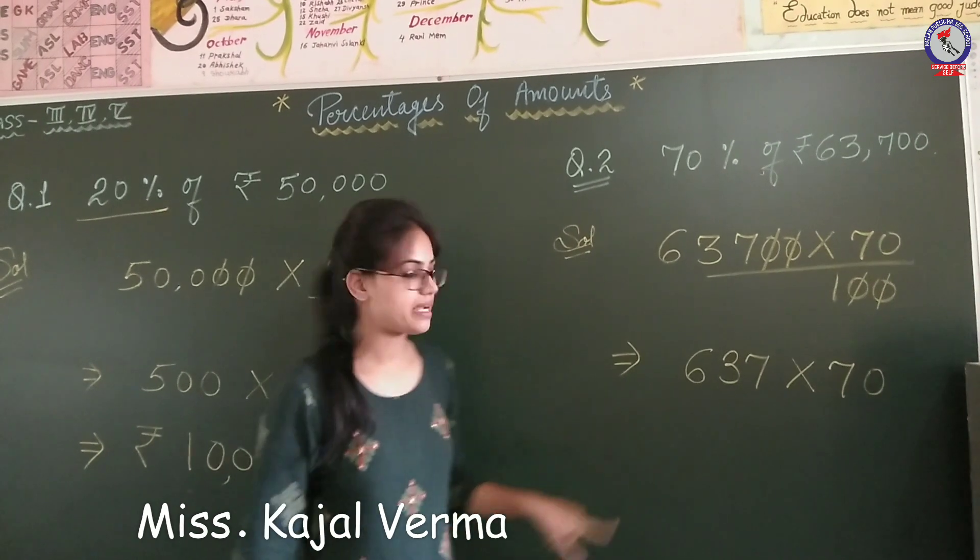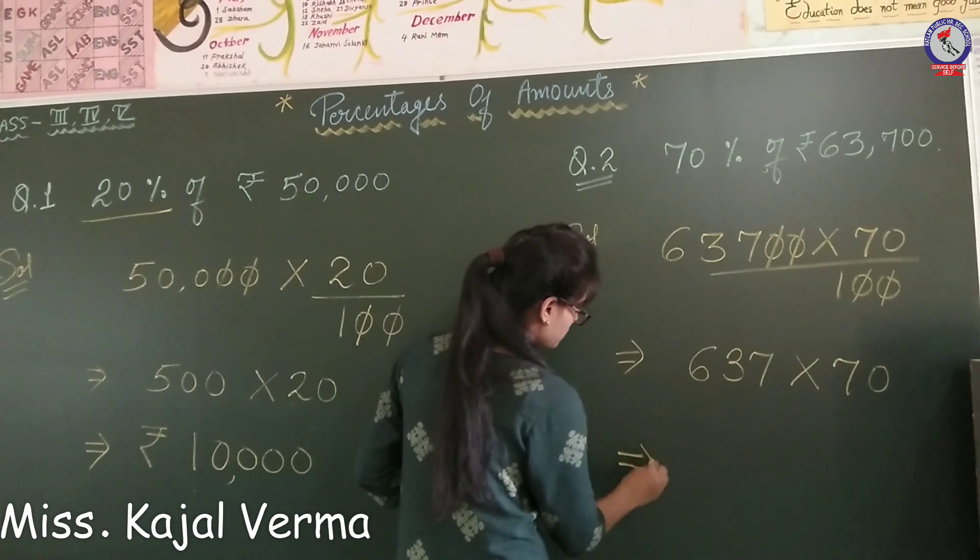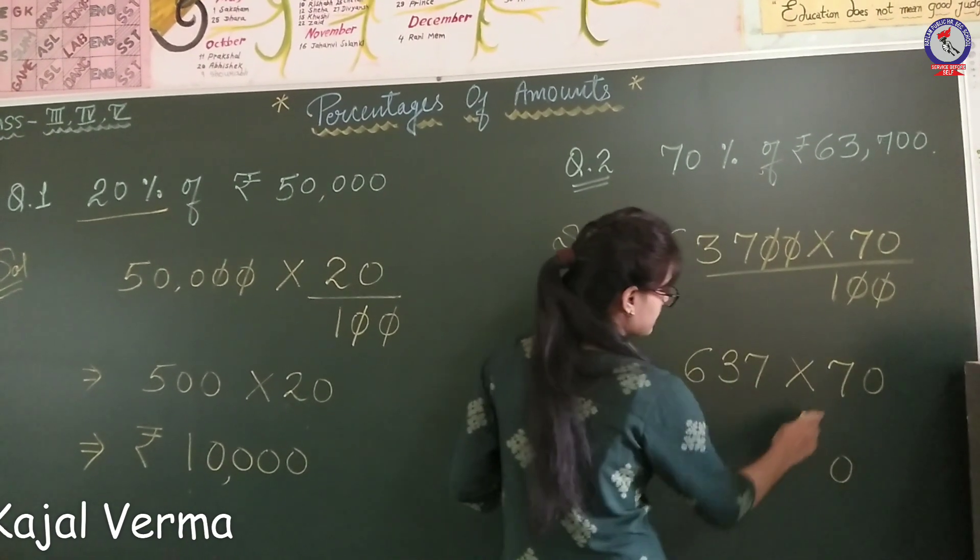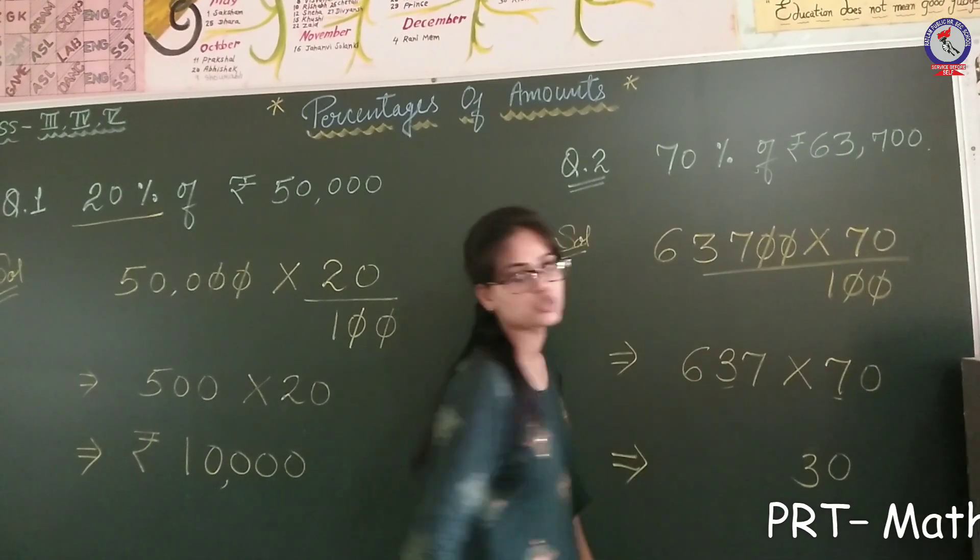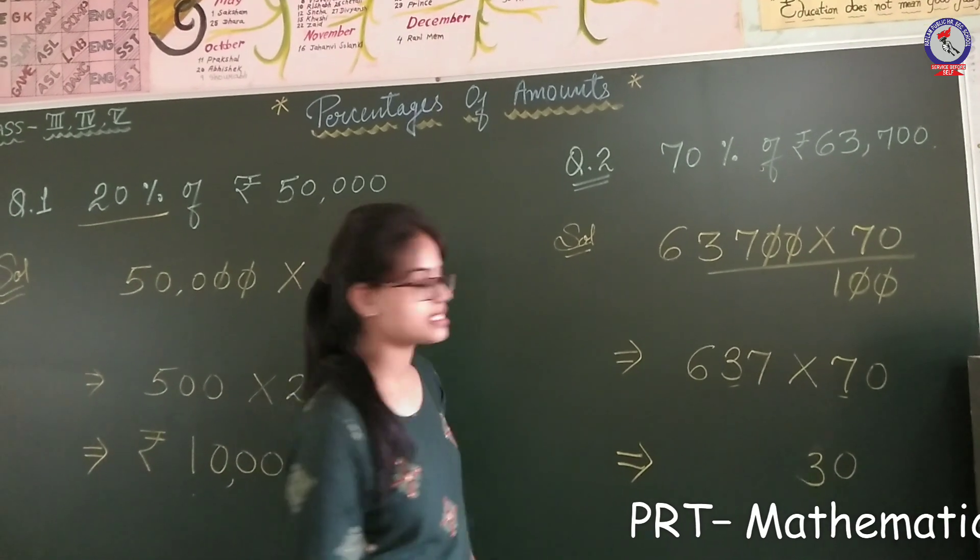Now we will multiply. 7 times 7 is... then, 7 times 3 is 21, 21 plus 6 is 27.